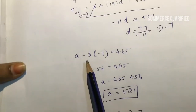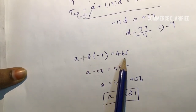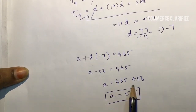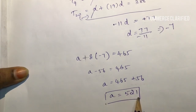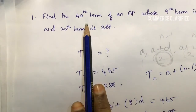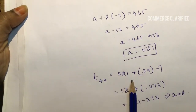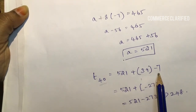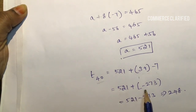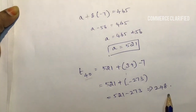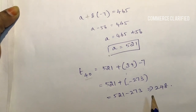Substituting d equals minus 7 into the equation: a plus 8 into minus 7 equals 465, so a minus 56 equals 465, giving a equals 521. Now T40 equals a plus 39d equals 521 plus 39 into minus 7 equals 521 minus 273 equals 248. So the 40th term T40 equals 248.